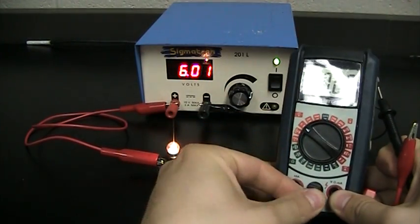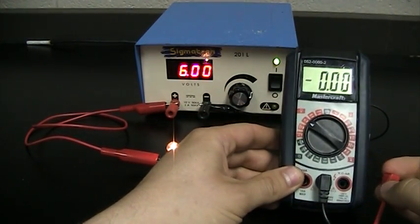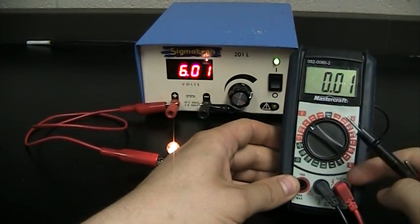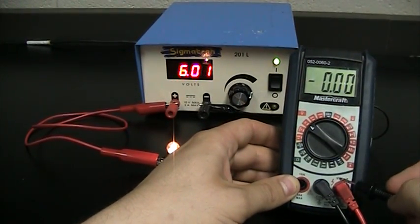Now the color doesn't actually matter but if it helps keep it straight that'll help. The black one goes in the center and your other lead is going to go on the right hand side where it says V.